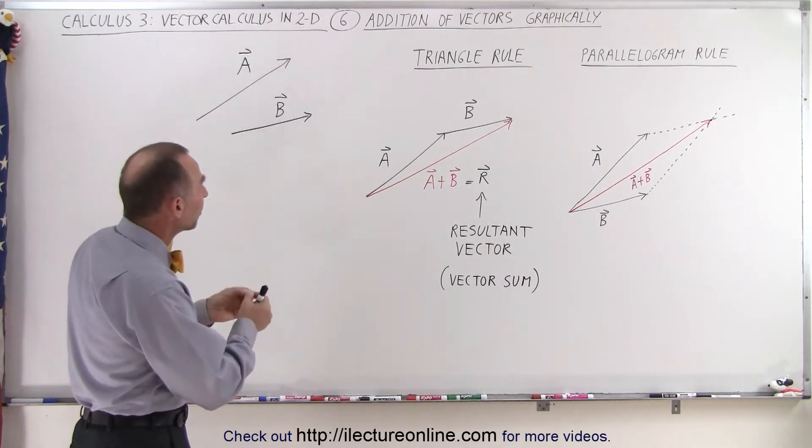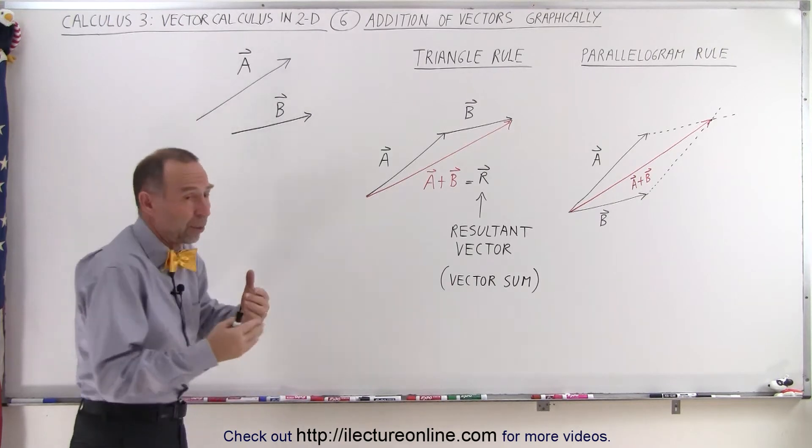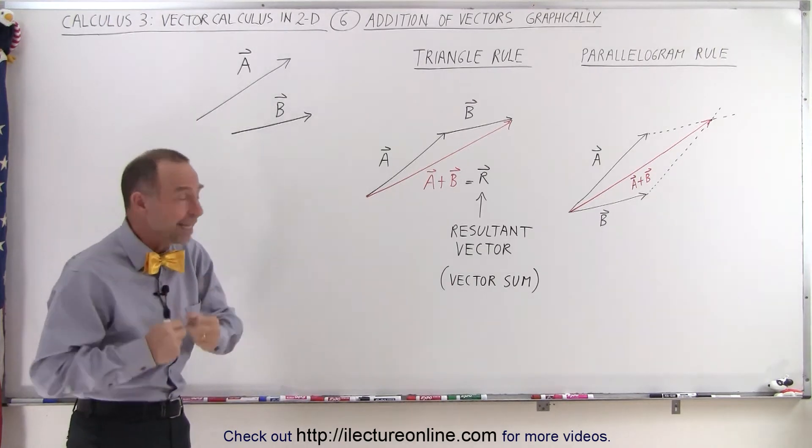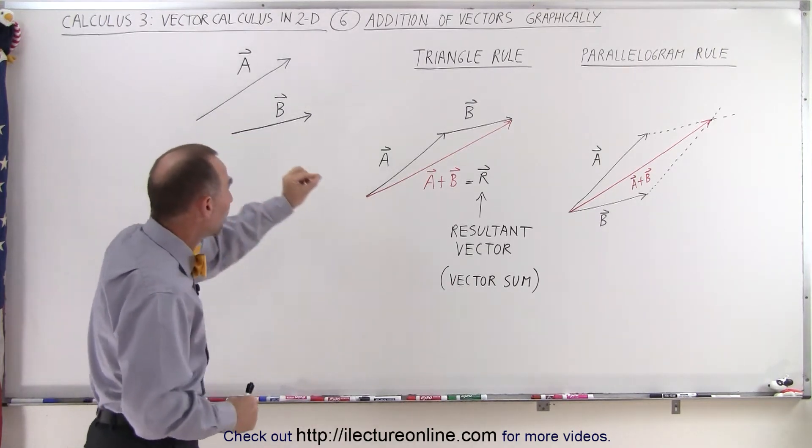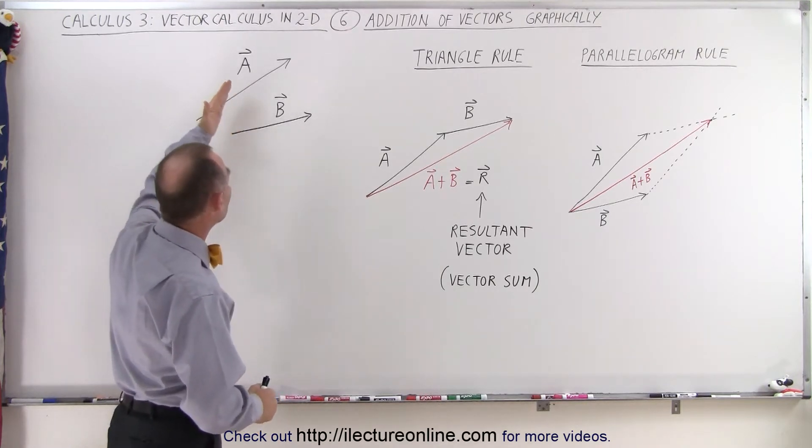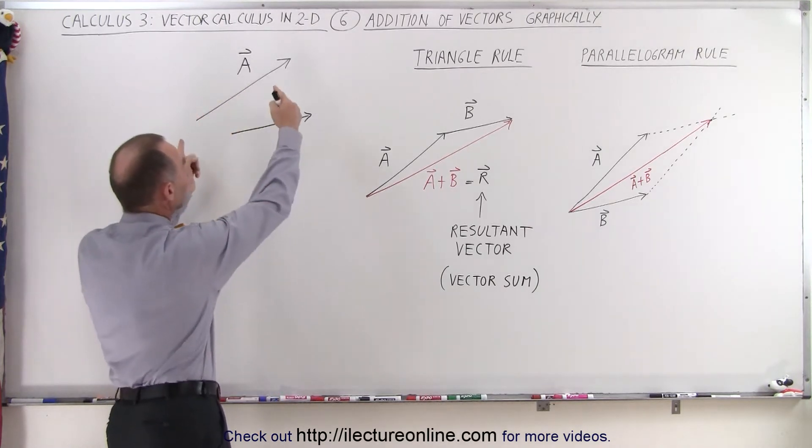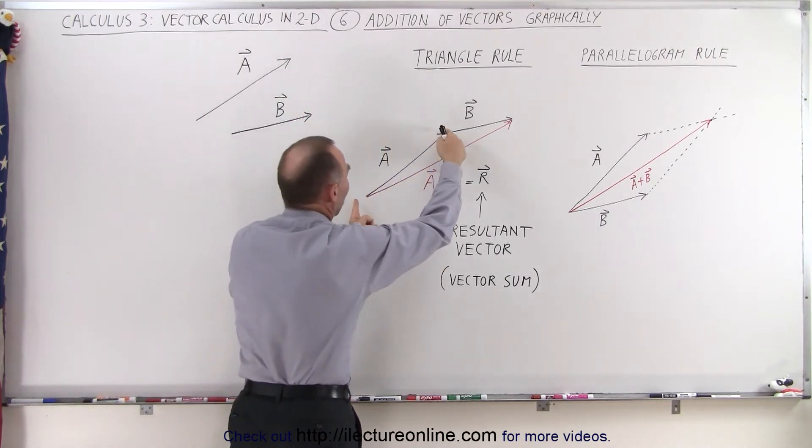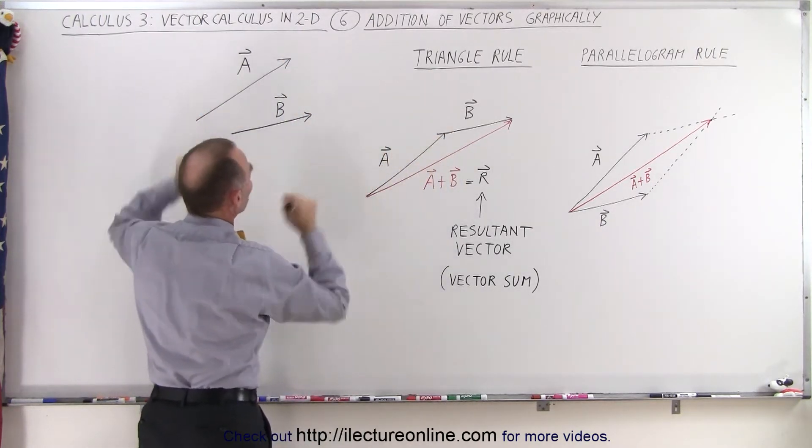Well, the first method, the triangle rule, you start with the first vector. It doesn't matter which one is your first vector. You can take either one and place it anywhere you like as long as you don't change the direction of the vector or the length of the vector. So we can take vector A and put it right over here, same length, same direction.